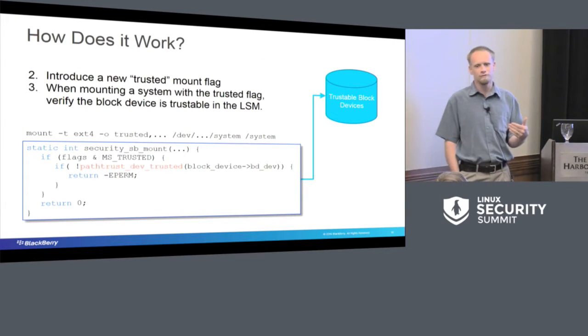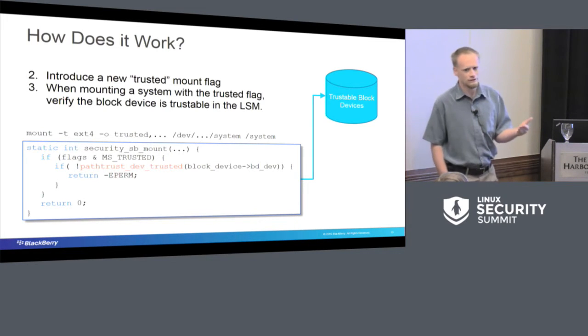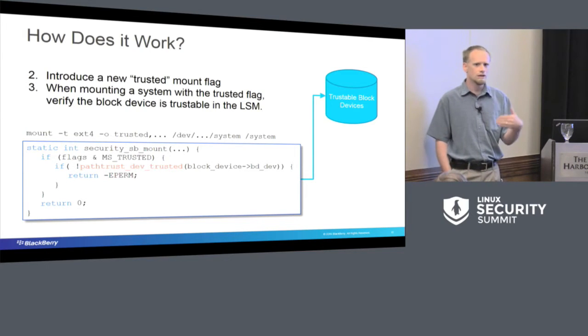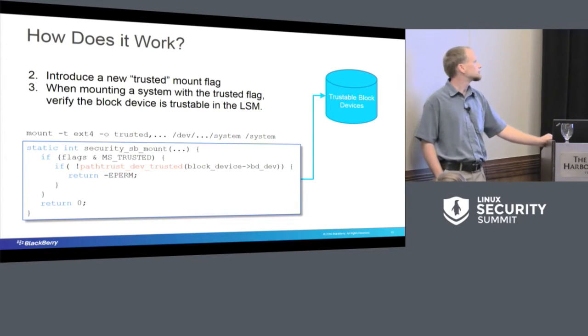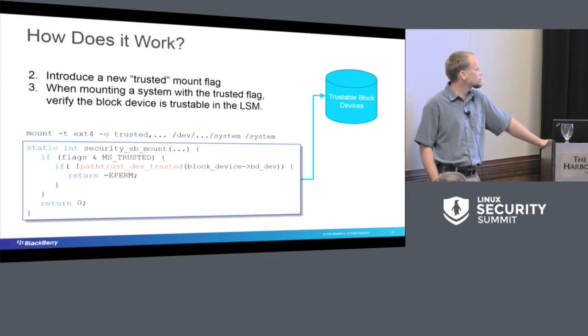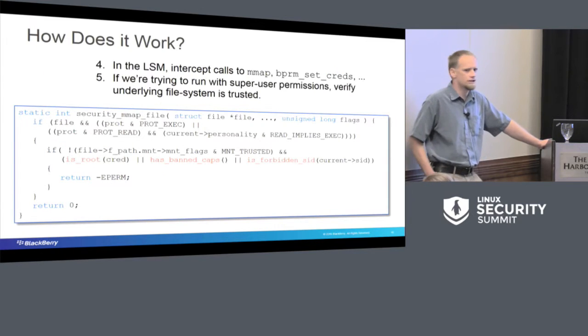When we go to mount a file system, we actually added another mount option, and it is trusted. When you actually try and mount something as trusted, it'll go through and try to figure out whether or not this is a trustable block device. We did this because it's really hard to poke down through all of the VFS layers to figure out the underlying block device and whether or not that underlying block device is DM Verity when you're looking at things from the very high level.